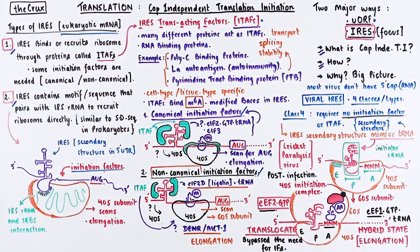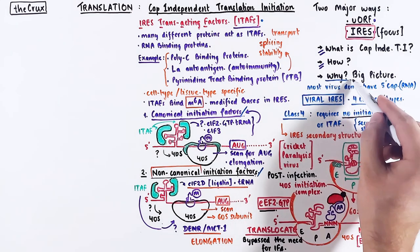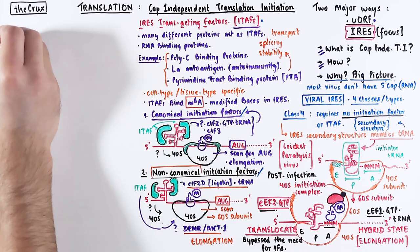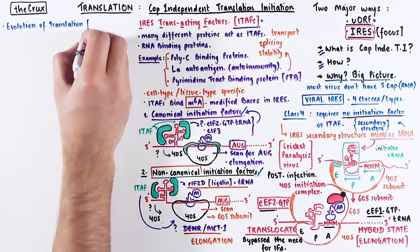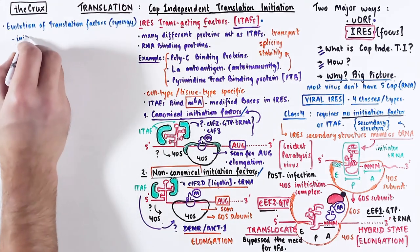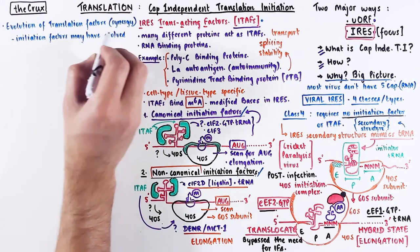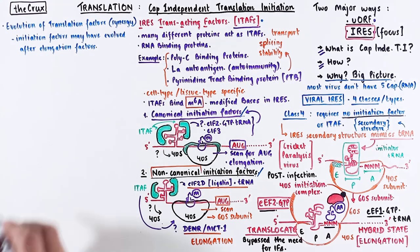This completes our discussion on internal ribosome entry sites. Now we must discuss the importance of such ribosome entry sites and how they fit into the bigger picture. The first point concerns the evolution of translation factors, where a synergy is required between RNA and proteins. Based on our discussion of class 4 viral IRES, it suggests that initiation factors may have evolved after the elongation factors.